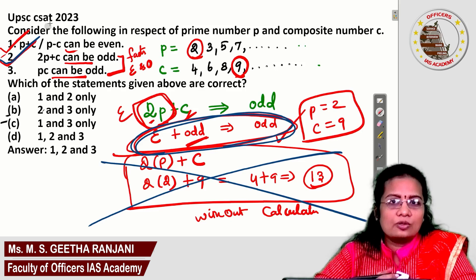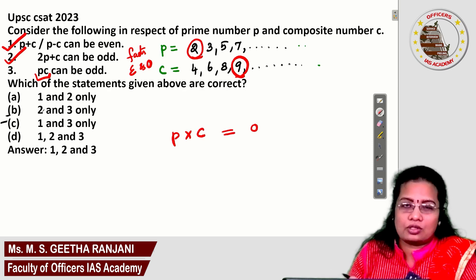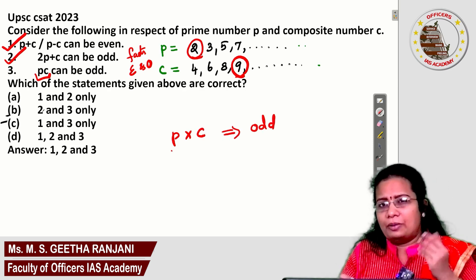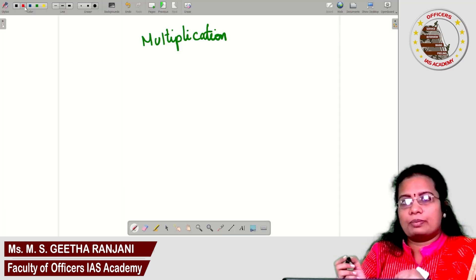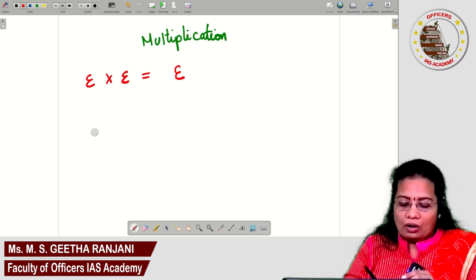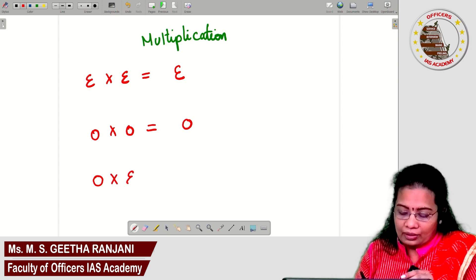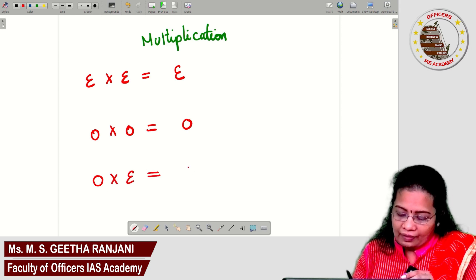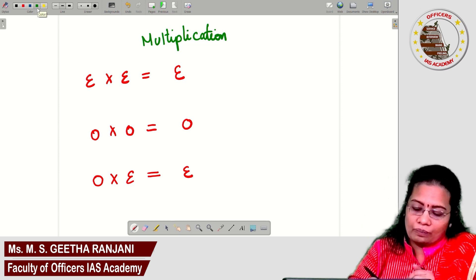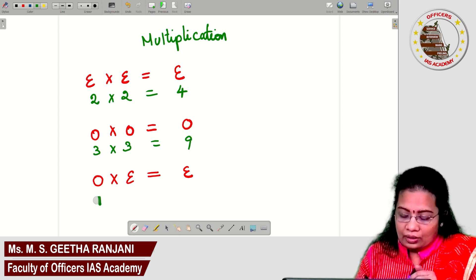Now for multiplication facts about even and odd numbers: even × even = even (e.g., 2 × 2 = 4), odd × odd = odd (e.g., 3 × 3 = 9), and odd × even = even (e.g., 1 × 4 = 4). These are the key multiplication rules.